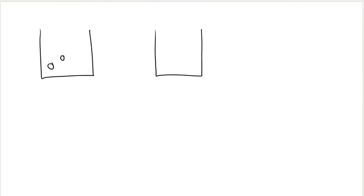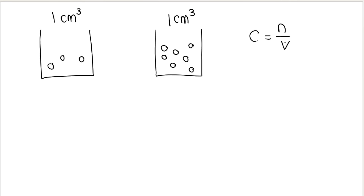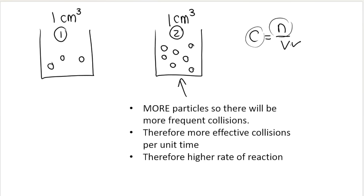Another way to increase the rate of reaction is to create more particles. If we have very few particles versus a lot more particles in the same volume — say both are one cubic centimetre — the volume is the same, but situation two has a lot more particles. The n is a lot bigger, so the concentration of situation two is much higher.